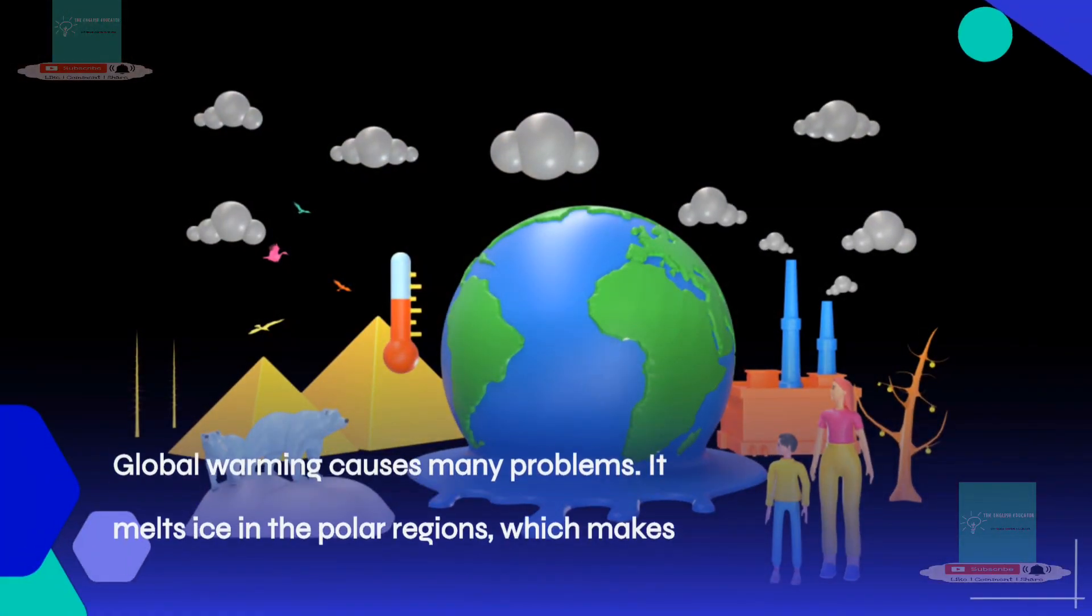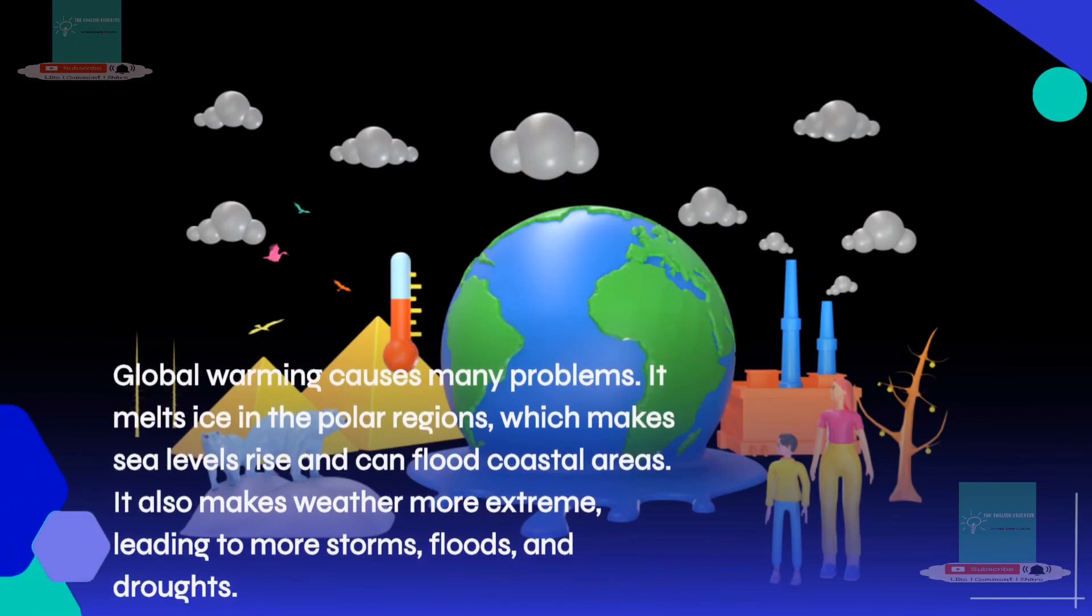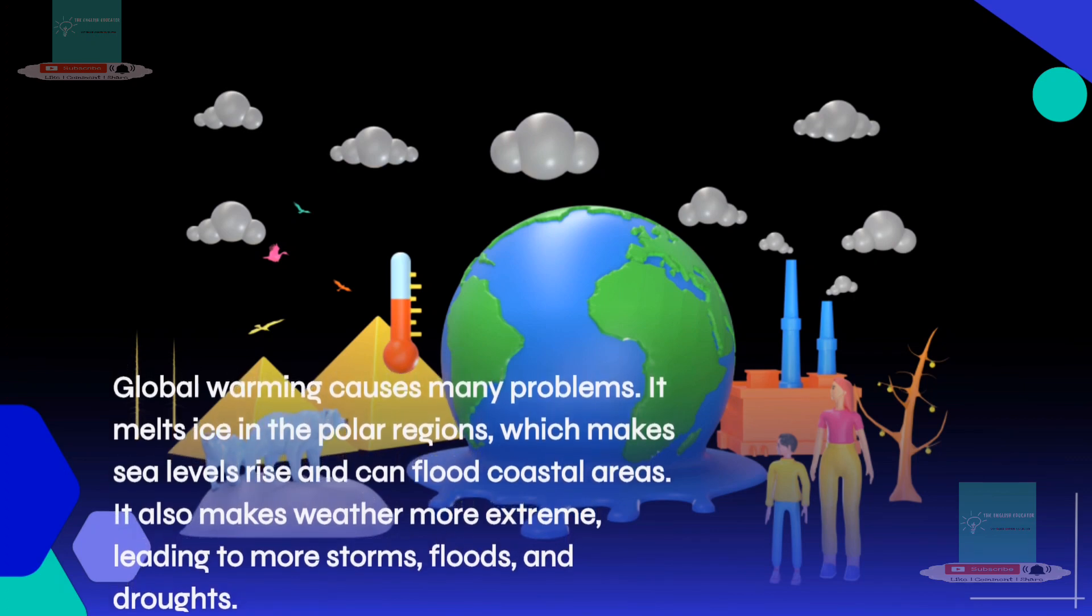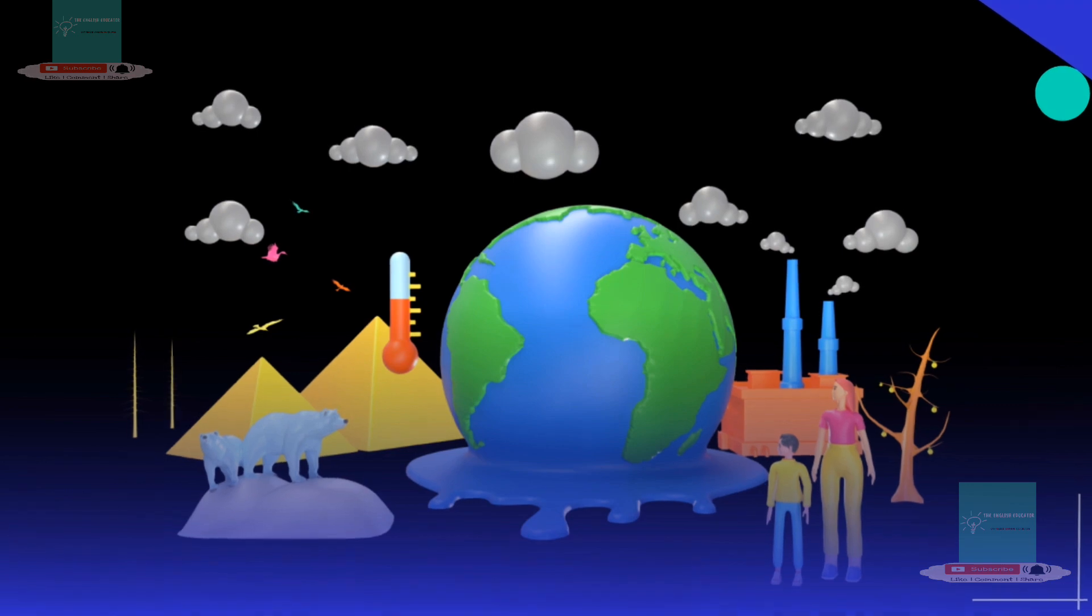Global warming causes many problems. It melts ice in the polar regions, which makes sea levels rise and can flood coastal areas. It also makes weather more extreme, leading to more storms, floods, and droughts.